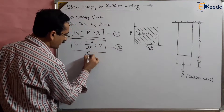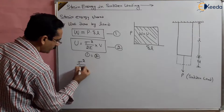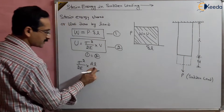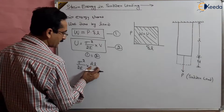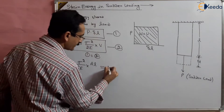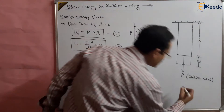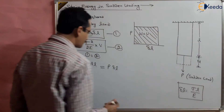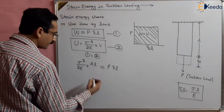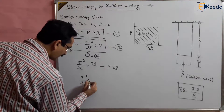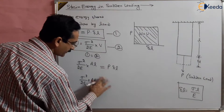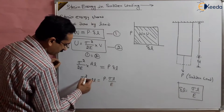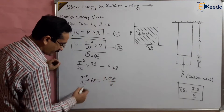These two equations are equal: the work done by the sudden load equals the strain energy stored in terms of stress. So we write: sigma squared upon 2E multiplied by volume equals P times delta L. Volume is area multiplied by total length. Delta L is given by sigma L upon E — this is the basic concept from simple stresses. Substituting, one sigma cancels, L cancels, and E cancels.